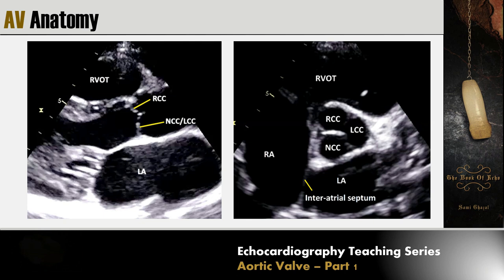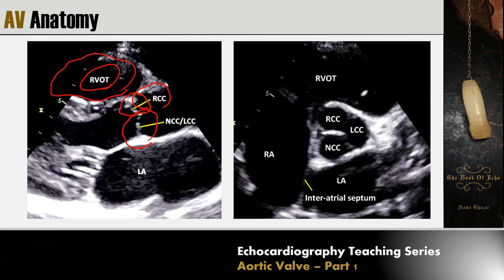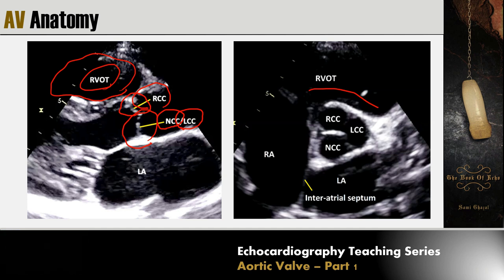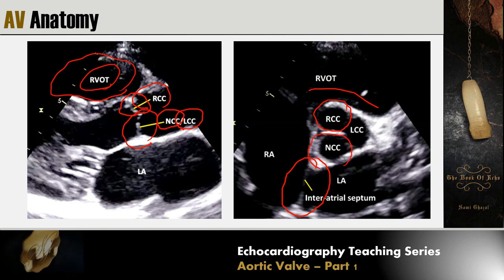Let's try to identify the aortic valve cusps. In the parasternal long axis view, the aortic cusp near the RV — specifically the RVOT — is the right coronary cusp. The one away from the RV can be either the non-coronary cusp, which is most common, or less frequently the left coronary cusp. In the short axis view, the aortic cusp in front of the RVOT is the right coronary cusp. The cusp in front of the inter-atrial septum is always the non-coronary cusp, and the remaining one is the left coronary cusp.